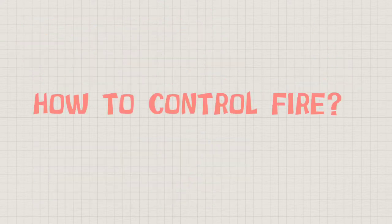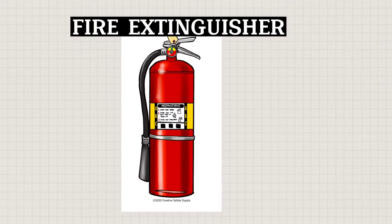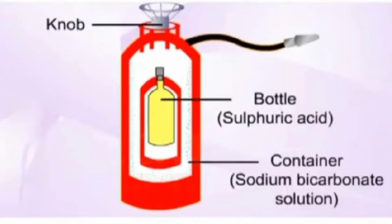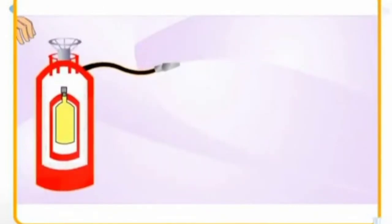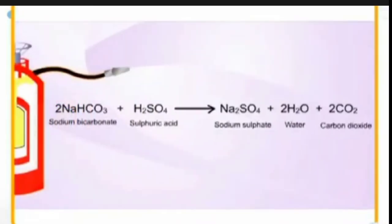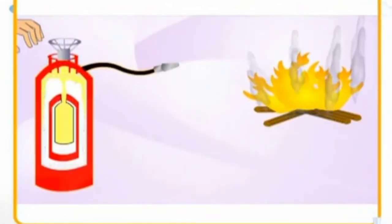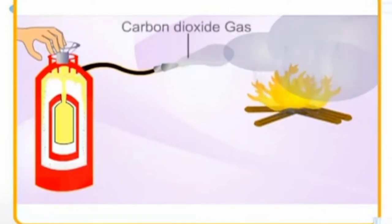How to control fire? We can control fire by using a fire extinguisher. It contains sodium bicarbonate solution and concentrated sulfuric acid that react to produce carbon dioxide. When the knob is struck, the bottle breaks, and the sulfuric acid reacts with the sodium bicarbonate to liberate carbon dioxide gas. The carbon dioxide released forms a blanket around the fire and cuts off the oxygen supply.